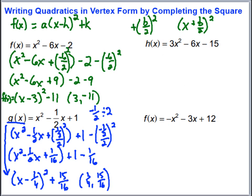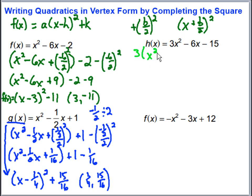Now this next example brings in something important to remember when completing the square: the coefficient of the x squared term must be 1 before we can complete the square. So I'm going to look at the x terms and factor out the 3, essentially dividing by 3. That gives 3 times the quantity x squared minus 2x, with space for the b over 2 squared piece, and then minus 15 outside. Now I add b over 2 squared — my b is negative 2, so it's negative 2 over 2, all squared.